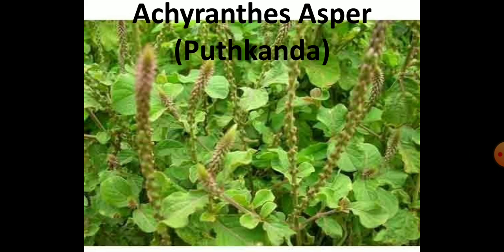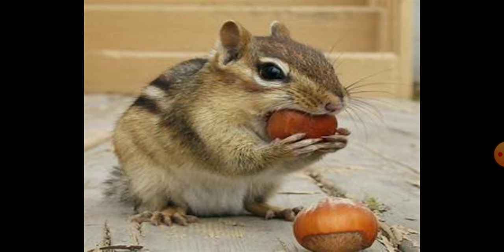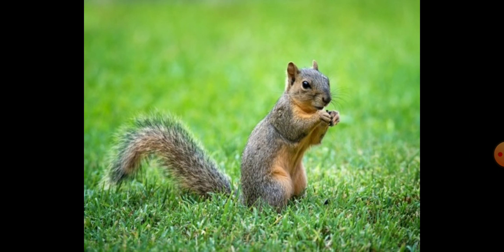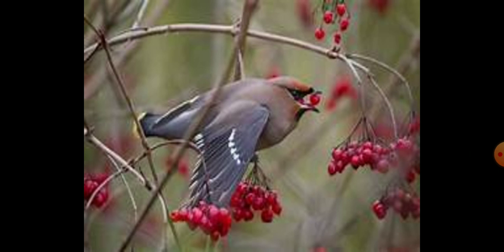Some plants have seeds with large spines which get attached to the clothes of men and hairs of animals, for example Achyranthes aspera. The dispersing animals are mammals and birds. In some plants the edible fruits are eaten by animals and birds, and the enclosed seeds are carried to distant places before they pass out with the feces, without any injury to the embryo.